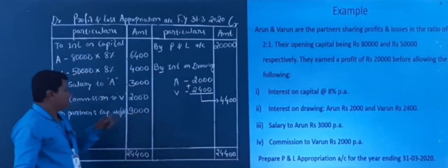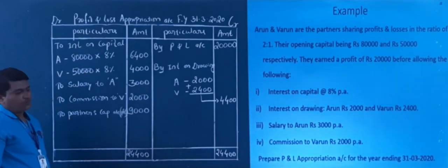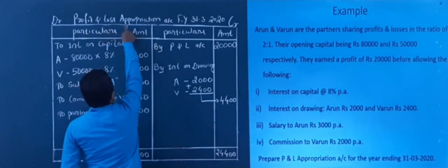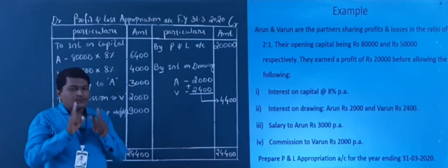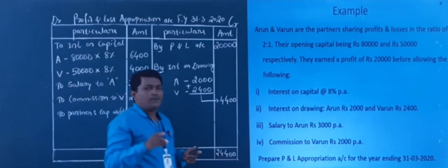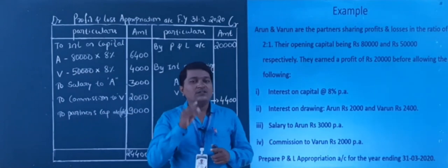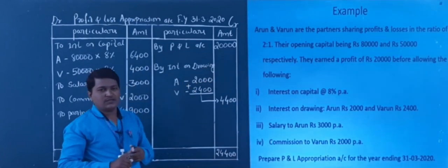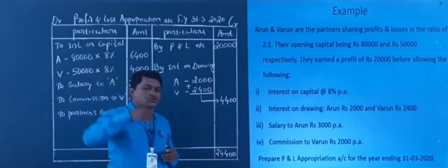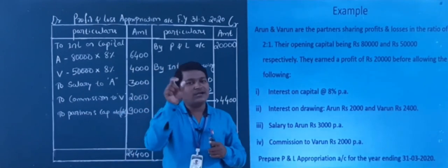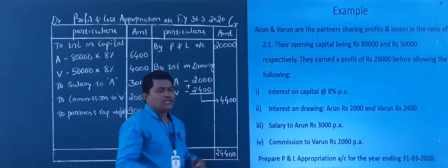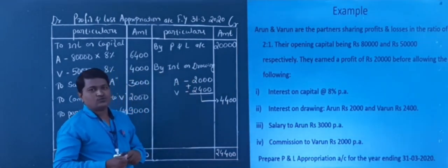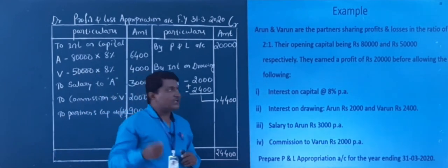This is our question. The difference is written in brackets as profit. So this is your answer. The profit is 9,000. This 9,000 we need to appropriate. So here in the profit and loss appropriation, this 9,000 needs to be shared between the partners.